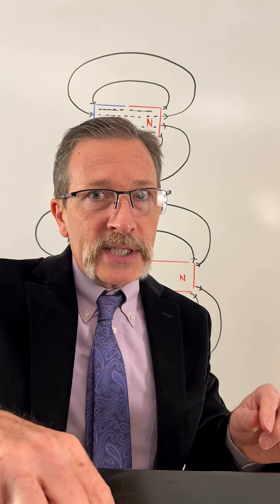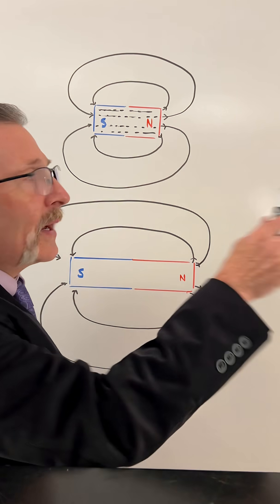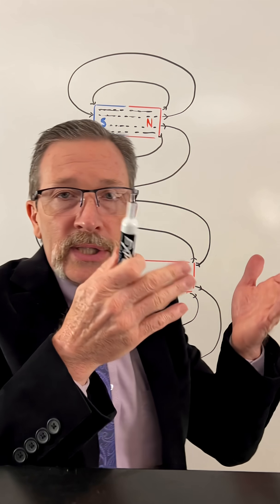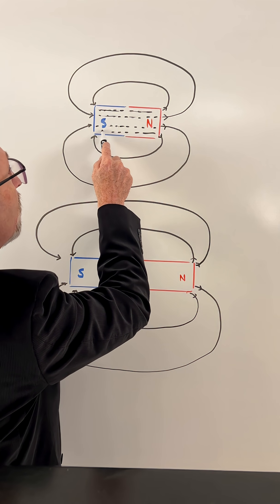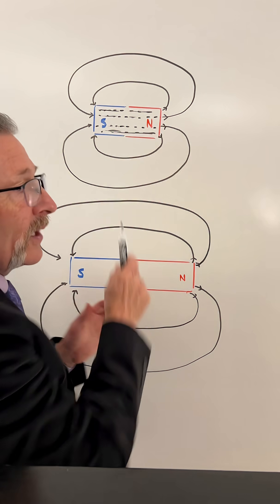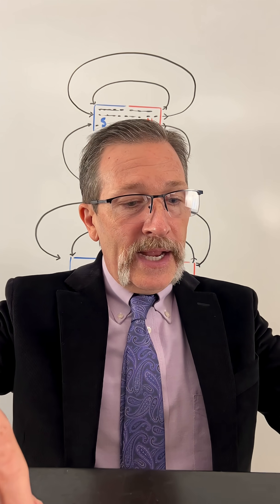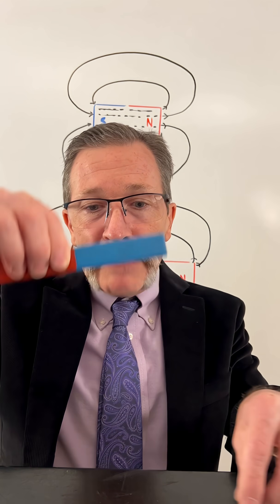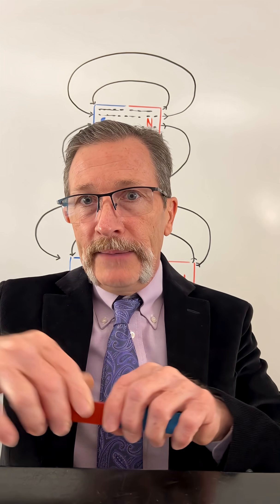But in the central part of this magnet, you'll see that they're happy. They're essentially going to have their lines going straight through. They don't emerge out the side. And therefore, we don't really get any of that magnetism in the middle of that magnet.